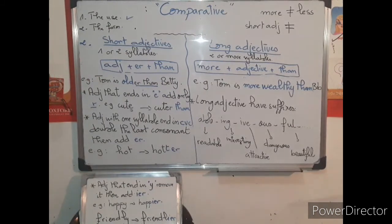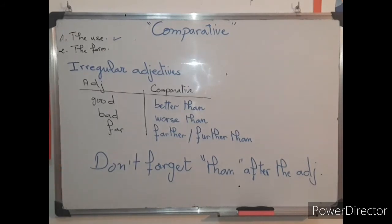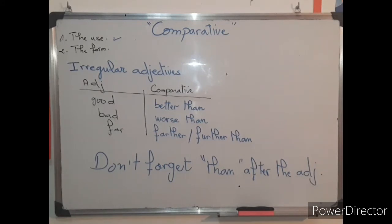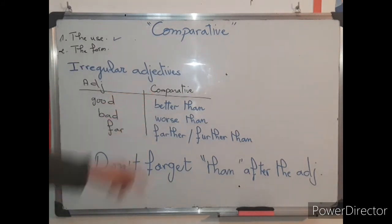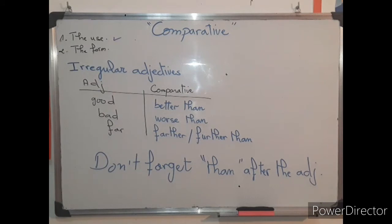There is another type: irregular adjectives, which don't follow any rule for either short or long adjectives. The three major ones are: 'good' becomes 'better than,' 'bad' becomes 'worse than,' and 'far' becomes 'farther than.' Always remember to use 'than' after the comparative form — whether it's a short, long, or irregular adjective.